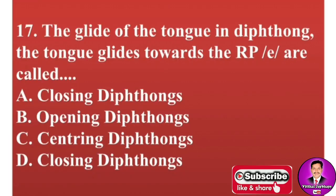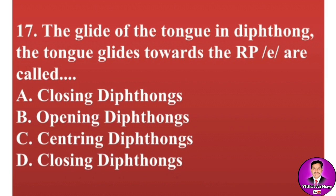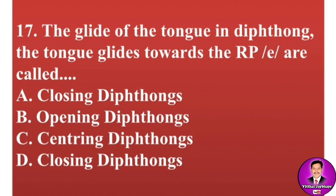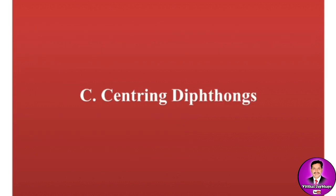Next MCQ: In diphthongs where the tongue glides towards the received pronunciation /ə/ — these are called: A, closing diphthongs; B, opening diphthongs; C, centering diphthongs; D, closing diphthongs. The correct answer is C — centering diphthongs.